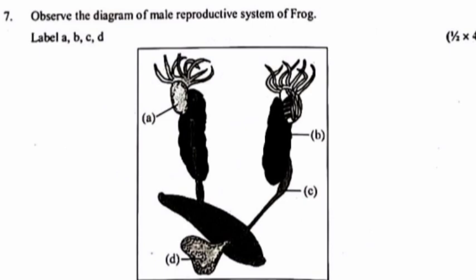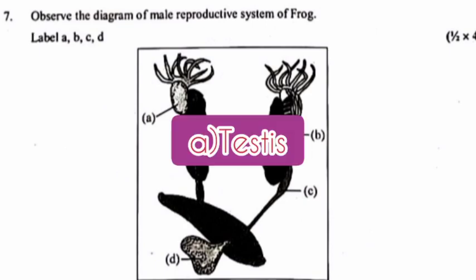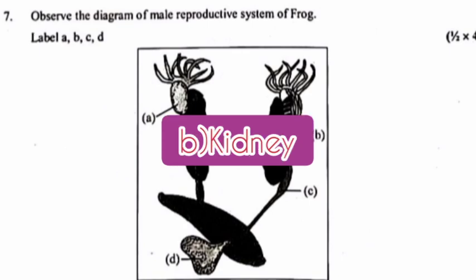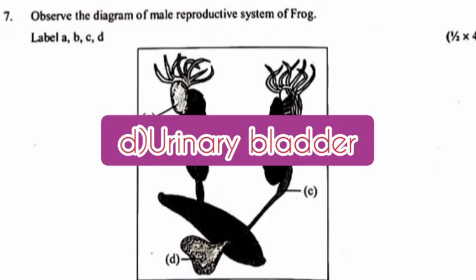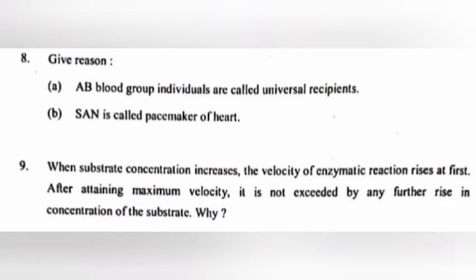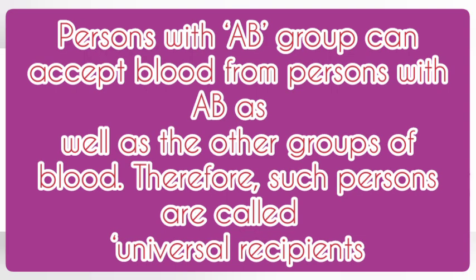7. Observe the diagram of the male reproductive system of a frog; label A, B, C, D — answer: A: testis, B: kidney, C: urinogenital duct or ureter, D: urinary bladder. 8. Give reason: (a) AB blood group individuals are called universal recipients — answer: persons with AB group can accept blood from persons with AB as well as all other blood groups, therefore such persons are called universal recipients.